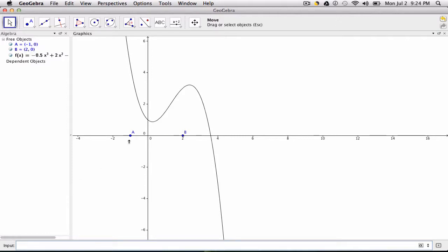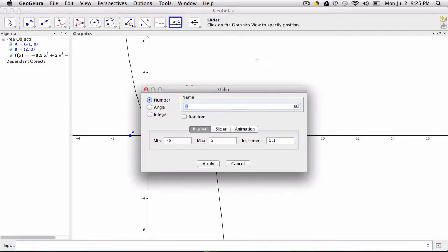Now we want to set a slider. Let's call this slider n, and we'll set the slider from 1 up to say 100, and the increments will go by 1.